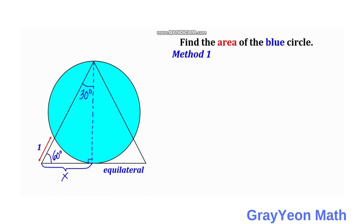Since this is a 30-60-90 triangle, if this side is x, then this whole distance is actually 2x. So that is 2x.